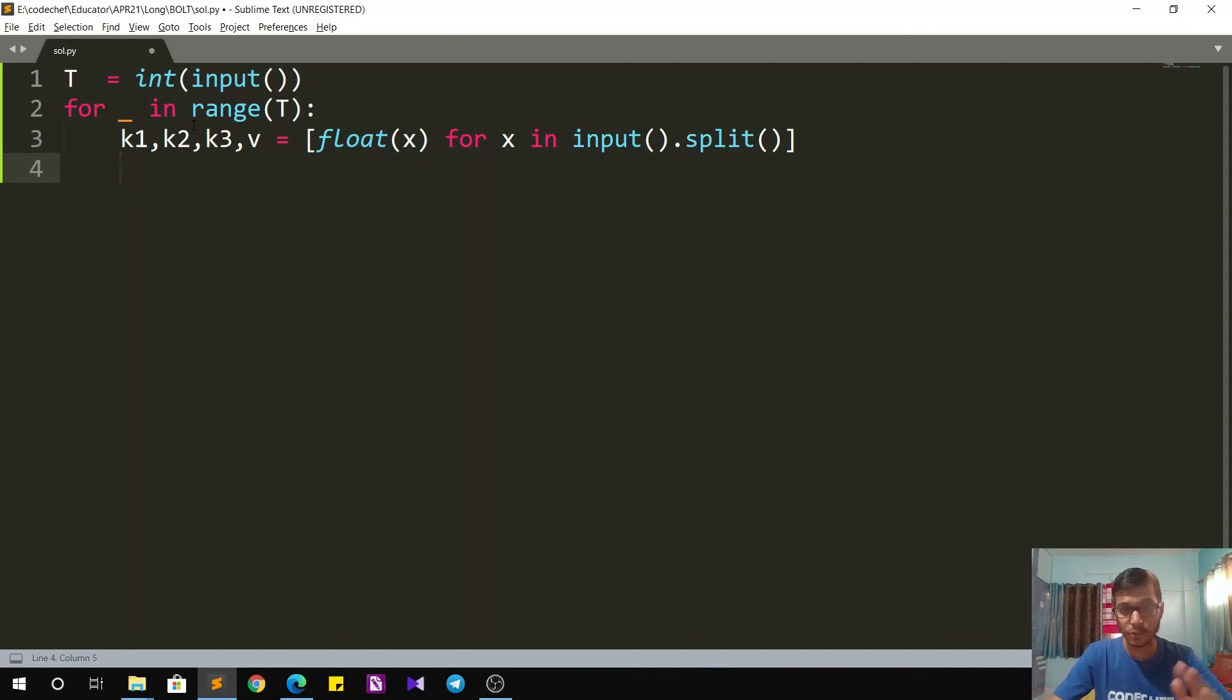Now I have to calculate this actual speed in the race. So speed is nothing but K1 into K2 into K3 into V. Then I have to calculate the time.